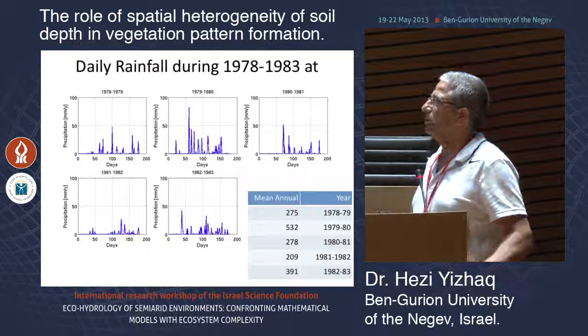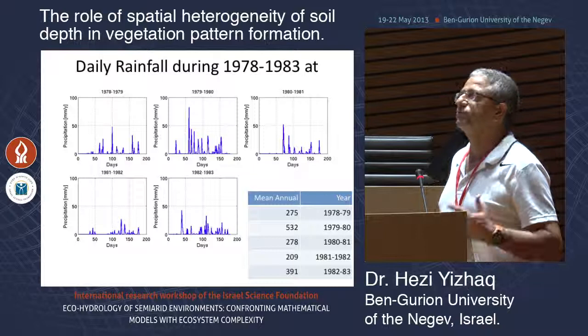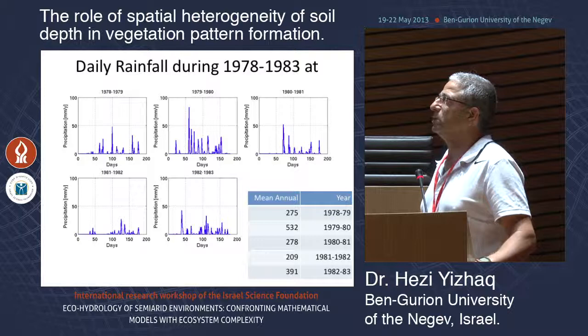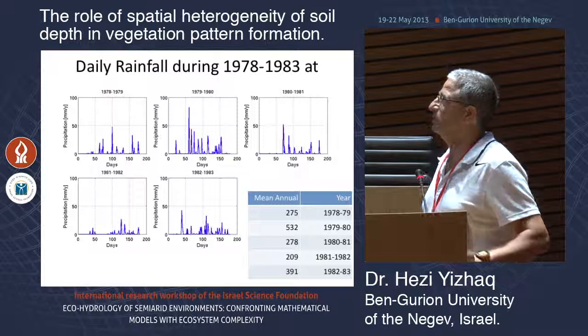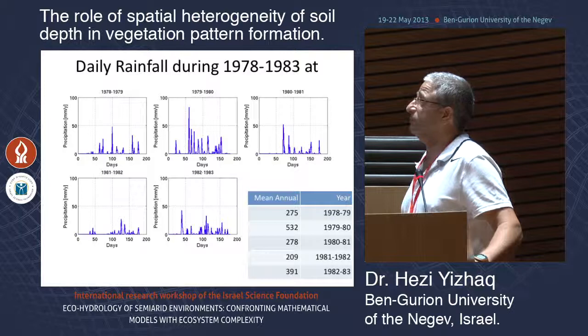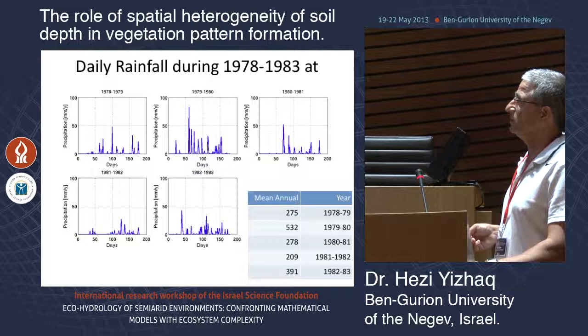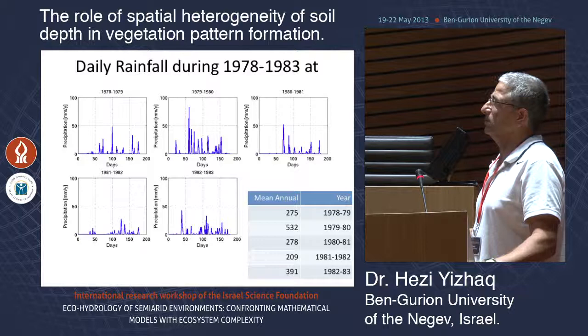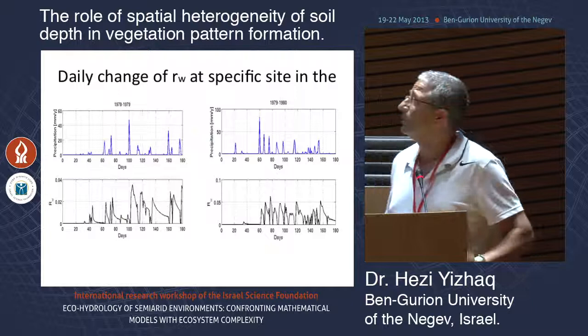The daily rainfall during the five years changed from season to season. There are periods without rain, then showers of 50 mm or even 80 mm in one day. It changed quite abruptly from year to year and from week to week. The mean annual precipitation in the first year is 275 mm, and in the next it is 532 mm.